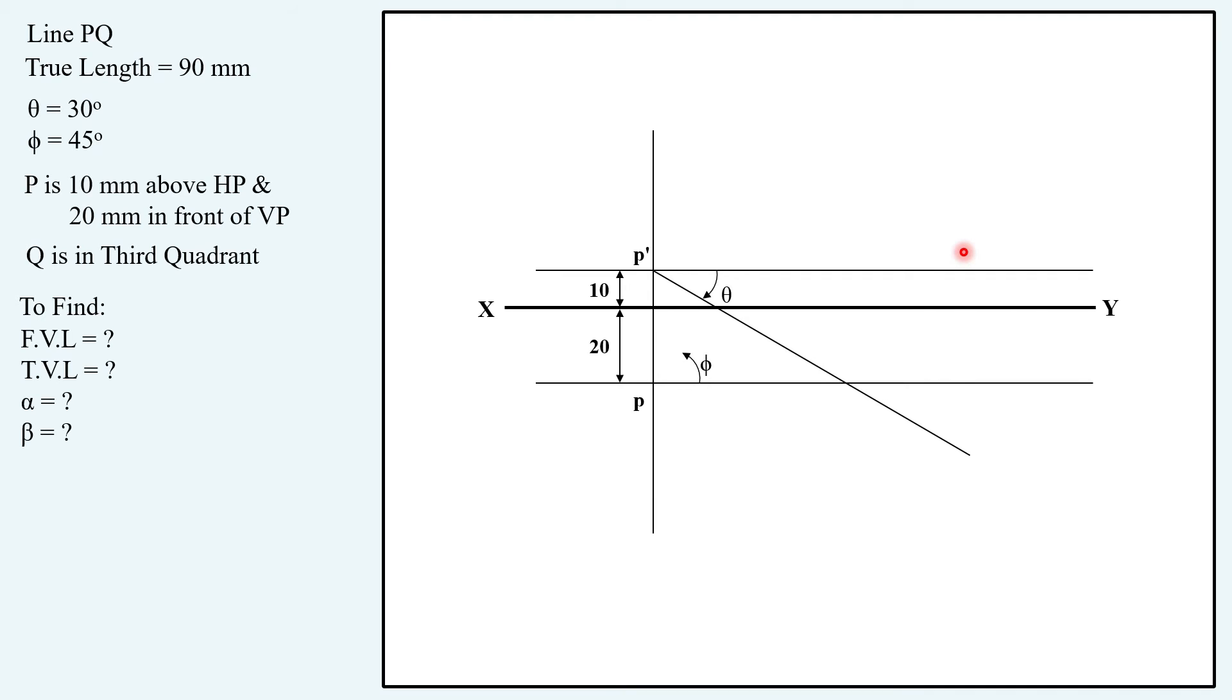We have true length 90 mm so keeping the compass on P' with radius 90 mm drawing an arc. Similarly keeping compass on P and creating another arc here.